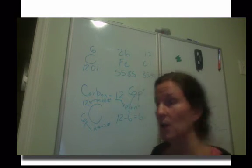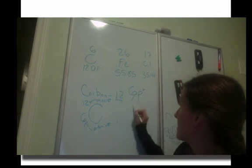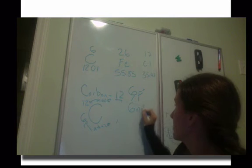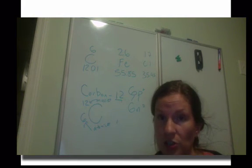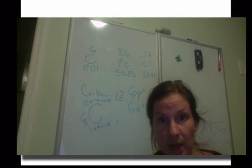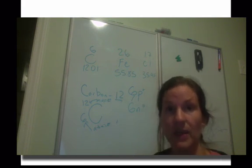This particular atom, carbon-12, has six protons. It has six neutrons. And then if it's neutral, so no charge, how many electrons will it have? It'll have the same number of electrons as it has protons to make it electrically neutral.